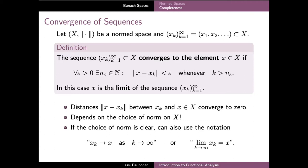For a sequence on a normed space we define convergence as the property that there exists an element x such that the distances between the elements xk of the sequence and the element x converge to zero as the index k grows. In terms of epsilons, this means that for any epsilon there exists a limit index N(epsilon) such that the norm of the difference x minus xk is less than epsilon whenever k is larger than N(epsilon). If the sequence converges, then x is called the limit of the sequence.